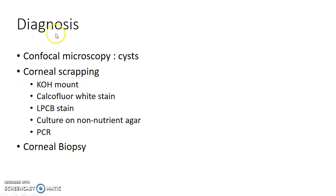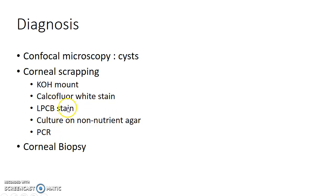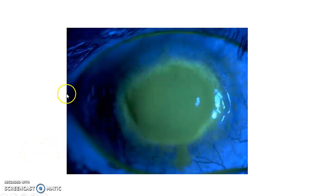How do you diagnose a case of Acanthamoeba keratitis? Confocal microscopy can be done and it reveals cysts of Acanthamoeba. Corneal scraping can be done and subjected to KOH mount, calcofluorite stain, LPCB stain, culture on non-nutrient agar with E. coli, and PCR. KOH mount and LPCB stain reveal cysts of amoeba. Corneal biopsy can also be done. This picture shows an Acanthamoeba keratitis patient with fluorescent staining.